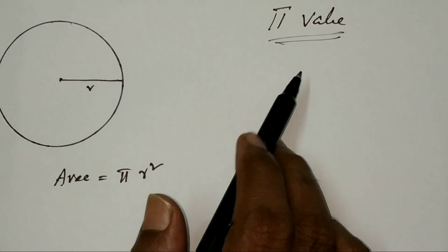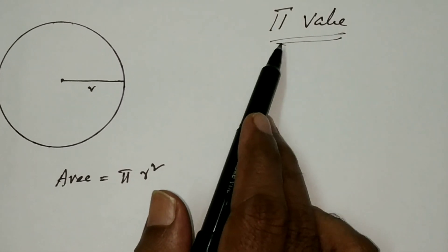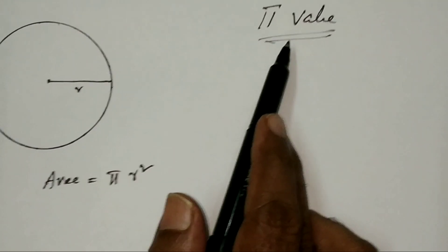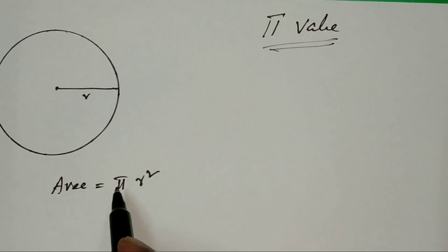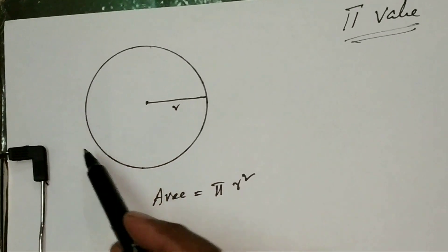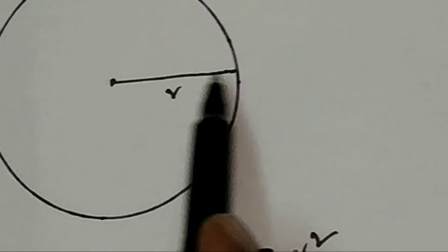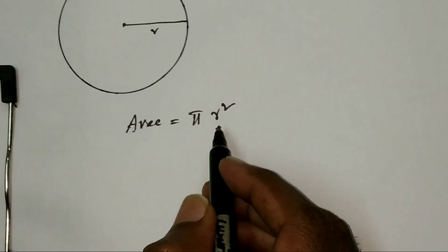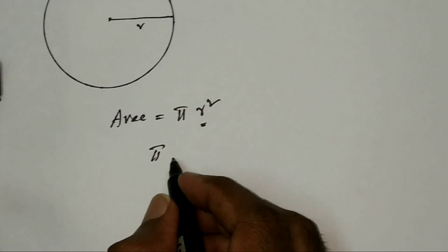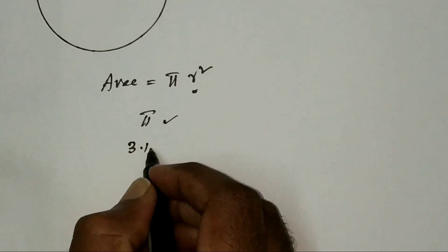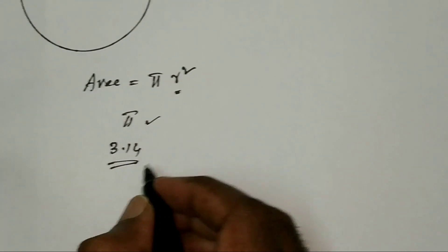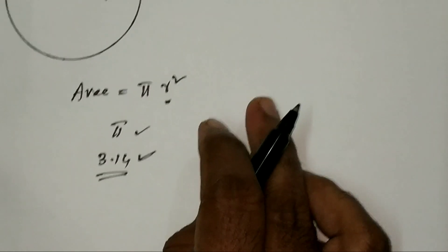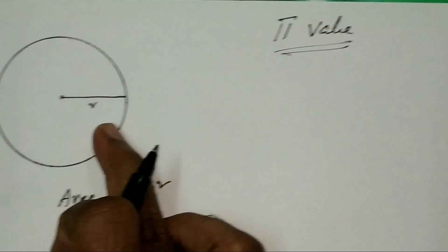Hi guys, in this video we will learn about pi: what its value is, how to calculate it, and why it is used in the area of a circle. Looking at the diagram, there is a circle with radius r. We all know the area of a circle is pi r squared. Pi is a special value — 3.14 — but why exactly is pi equal to 3.14?